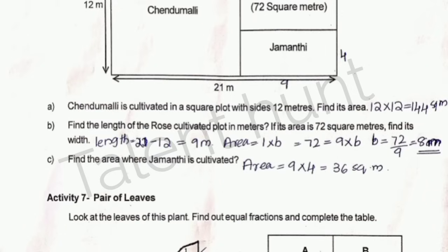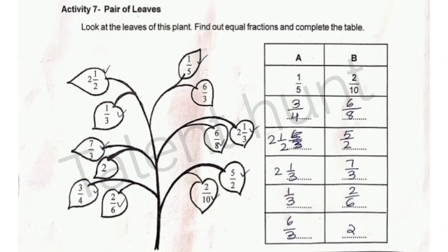Activity 7: Look at the leaves of this plant — find out equal fractions and complete the table. For example, 1 x 5: the equal fraction is 2 x 10. Further entries include: 1 by 5 equals 2 by 10; 3 by 4 equals 6 by 8; 2 by 1; 5 by 2; 2 by 3; and continuing with 7 by 3, 6 by 3, 8 by 2, 9 by 3, 9 by 4, and 10 by 3.